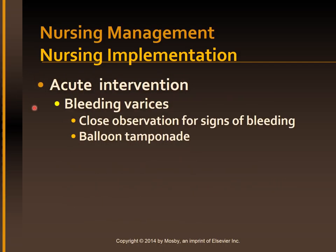Bleeding varices: if the patient has esophageal or gastric varices, observe for any signs of bleeding, such as hematemesis and melena. If hematemesis occurs, assist the patient, call the physician, and be ready to assist with treatment to control the bleeding. The patient will be admitted to the intensive care unit and the patient's airway must be maintained. Balloon tamponade may be used in patients who have refractory bleeding unresponsive to band ligation or sclerotherapy. The patient will be intubated. The balloon should be checked for placement by x-ray and patency should also be checked. Prevent complications related to balloon tamponade, especially aspiration.